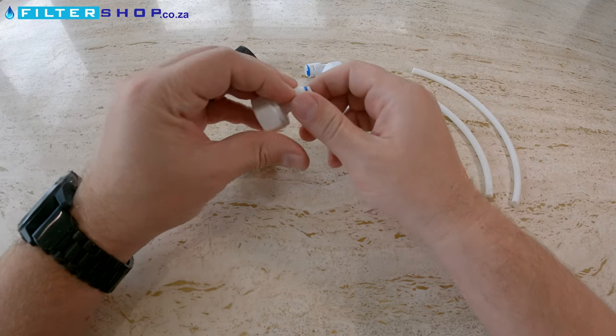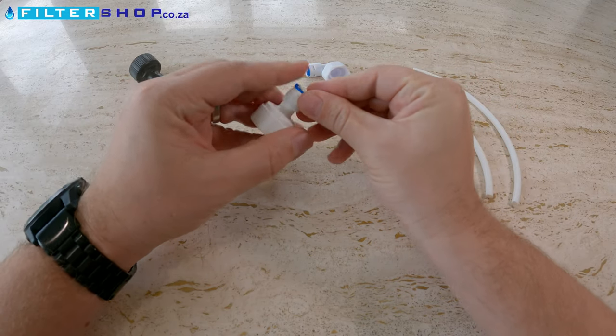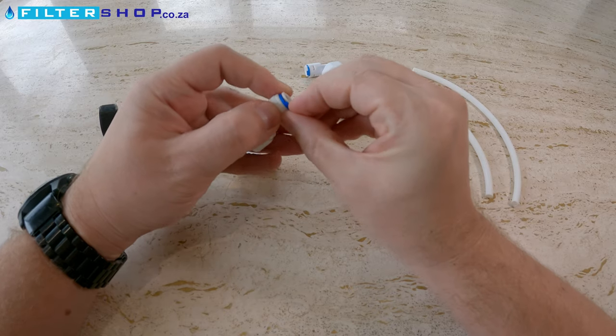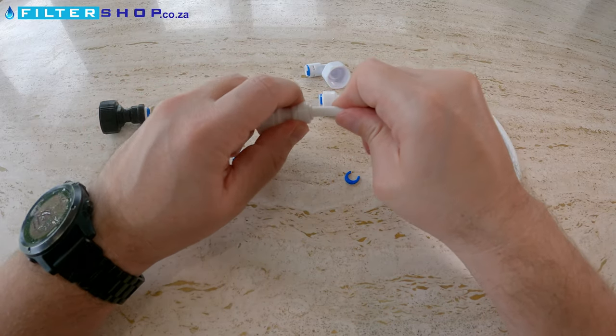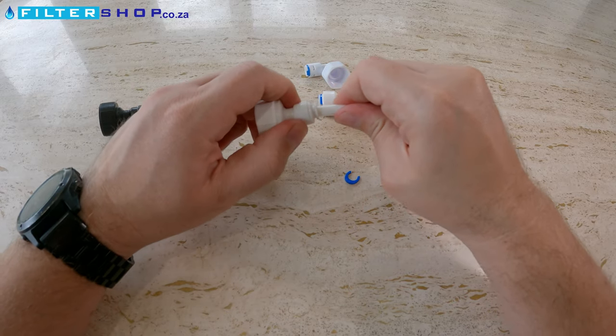These quick couplings basically you just remove the clip on them. Then you can insert the pipe, slide it in past the o-ring and then it locks.